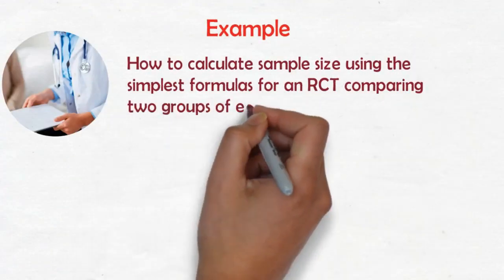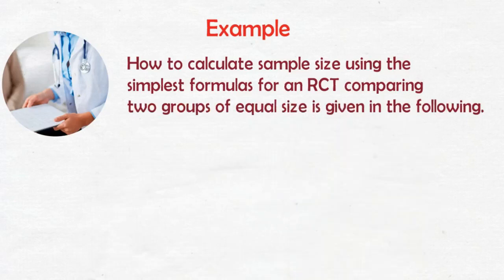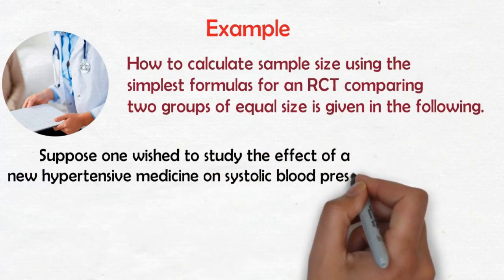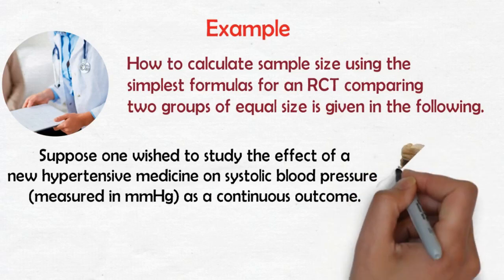An example of how to calculate sample size using the simplest formulas for a randomized controlled trial comparing two groups of equal size is given in the following. Suppose one wished to study the effect of a new hypertensive medicine on systolic blood pressure measured in mmHg as a continuous outcome.